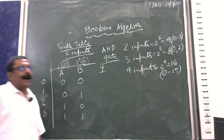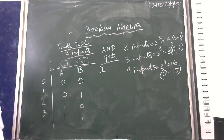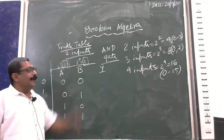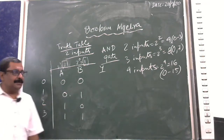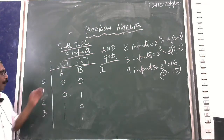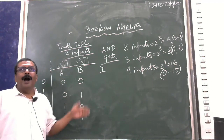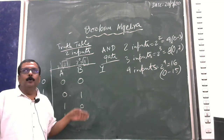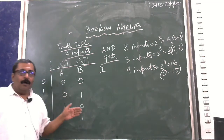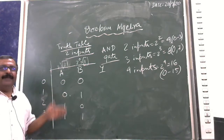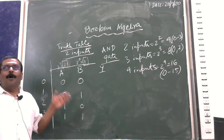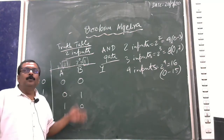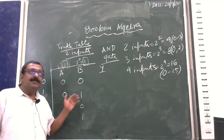For the AND gate there should be an output column. The AND gate rule is: when any one of the inputs is 0, the output will be 0.